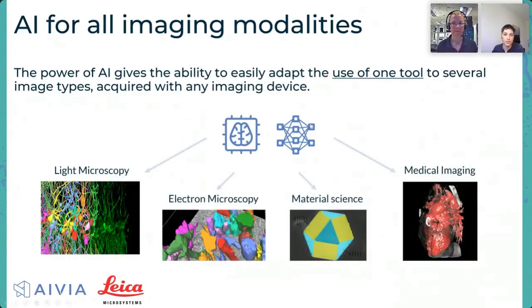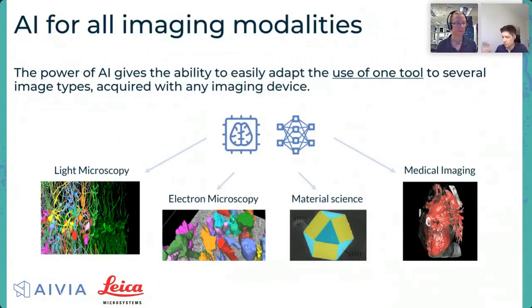This is broader than just one type of image — it can extend easily from light microscopy to electron microscopy, and also to fields like material science and medical imaging. You save time because you don't search for a tool, and we actually spend so much time googling things and trying to find solutions. This is really important for the present and future — being more powerful and spending less time on this side.